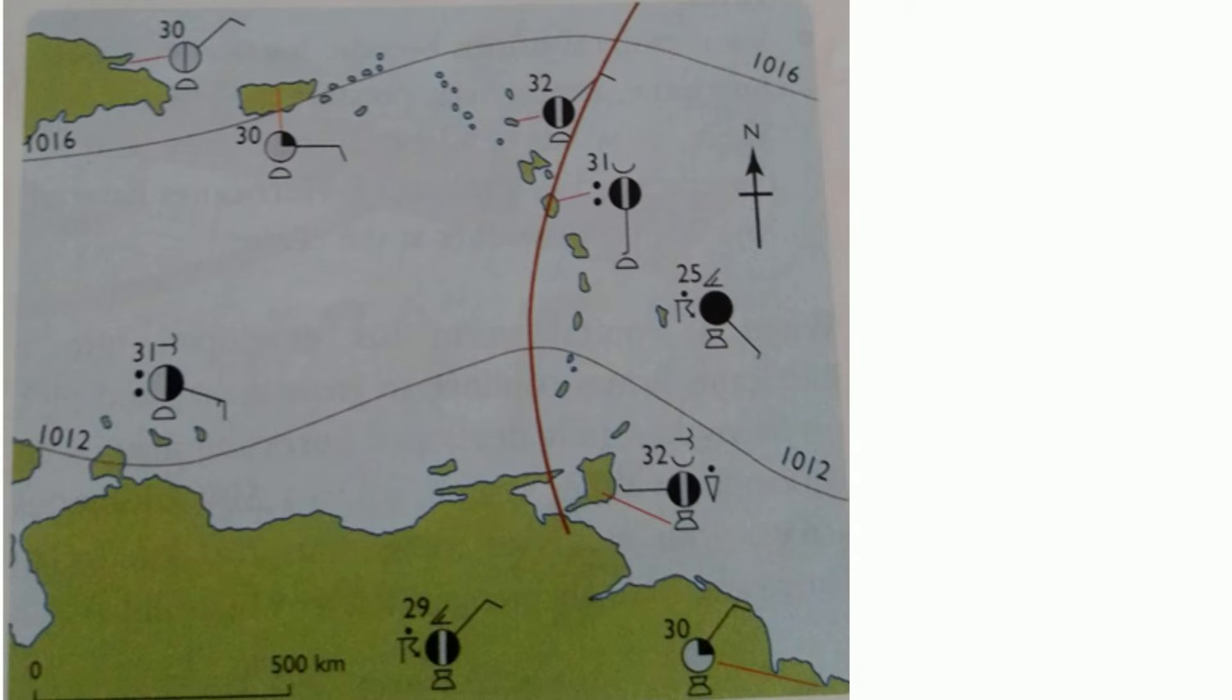Notice to the west that the cloud cover is far less than the cloud cover at the trough and in the zone of convergence.